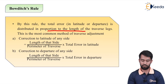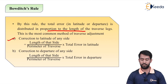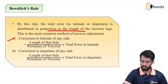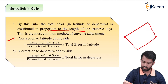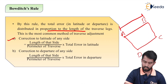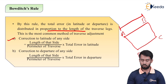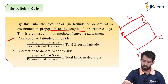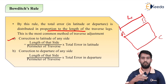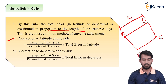Now the formulas are very important. The correction of latitude of any side — for example, if we are applying correction to sides AB, BC, CD, and DA — is equal to: length of that side (say AB = L1) divided by the perimeter (AB + BC + CD + DA, i.e., summation of all sides), multiplied by the total error in latitude, which we have already calculated.